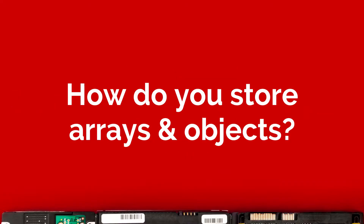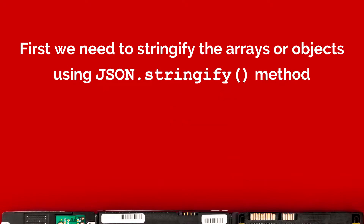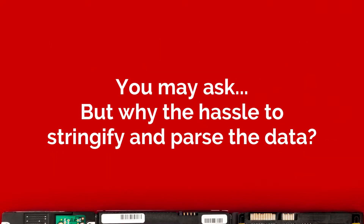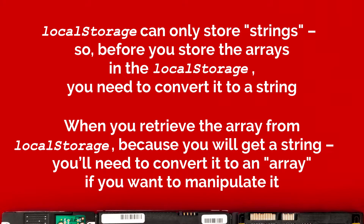That brings us to the main point of this video: how do you store arrays and objects? To save arrays and objects with the local storage API using JavaScript, there are two methods. First, we need to stringify the arrays or objects using the JSON.stringify method, and secondly, when we need to retrieve the value, we can use the JSON.parse method. Since local storage can only store strings, before you store arrays you need to convert them to a string, and when you retrieve them you'll need to convert the string back to an array if you want to manipulate it.